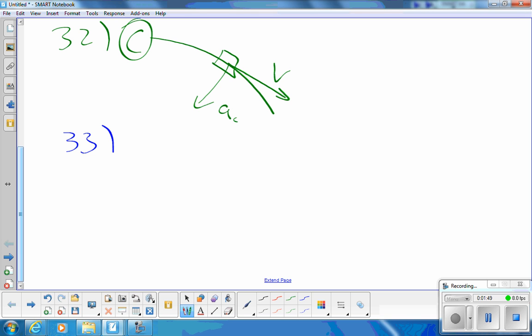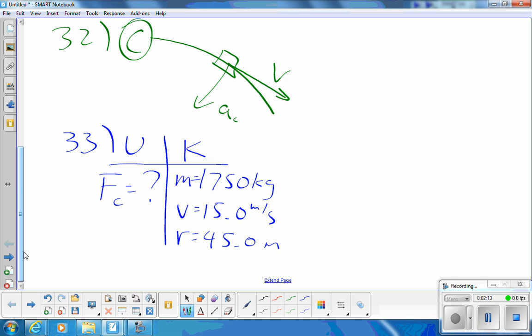It's a centripetal force question. I've got a mass of 1750 kilograms. Big car. Constant speed V of 15.0 meters per second around a track with a radius R of 45.0 meters. They want the centripetal force equals question mark. I'm going to use a combo form. Because it's the only way to do it in one step.